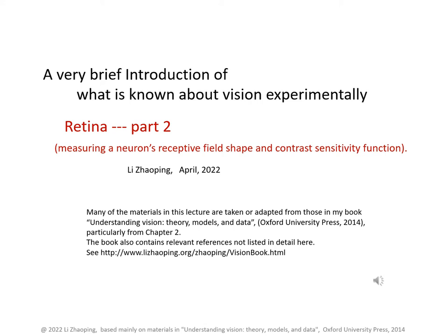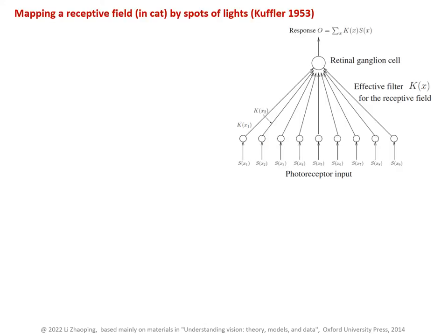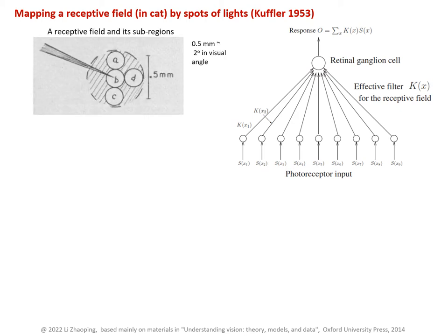Retina part 2. Experimentally, one can map a receptive field by shining a light at different locations X1, X2, etc., of the visual field, and observe the response O. This was what Kuffler did for a retina ganglion cell in a cat. The cat's receptive fields are larger than those in a monkey.